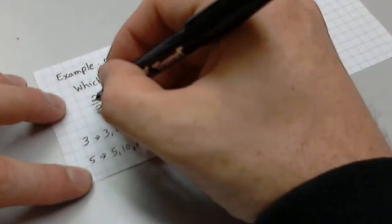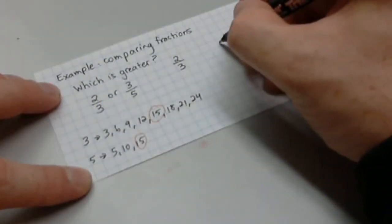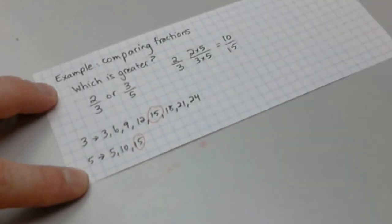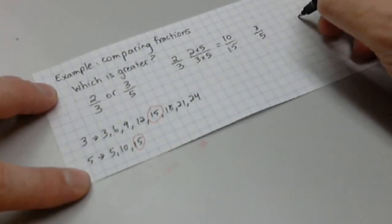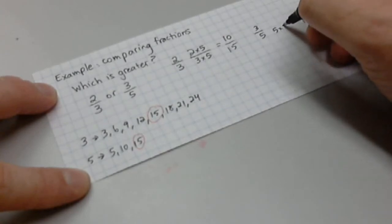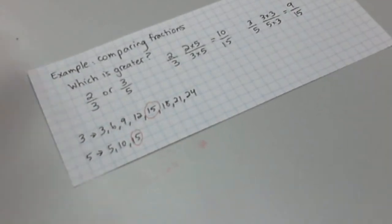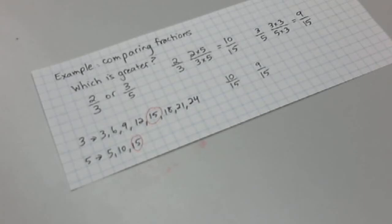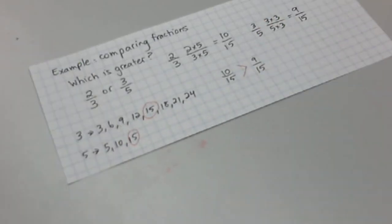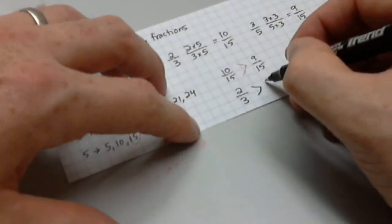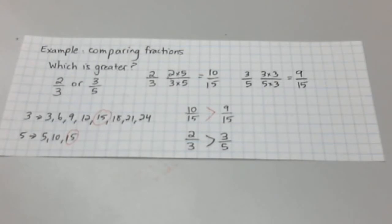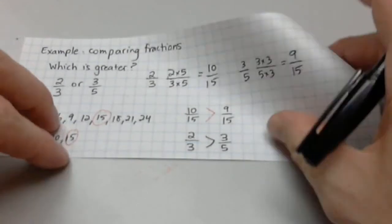So, I want to get from 2/3 to a number over 15. To do that, I have to multiply 3 times 5, which means that 2 also has to get multiplied by 5. So, 2/3, the equivalent fraction to that over 15 is 10 over 15. Likewise, with 3 over 5, I want to end up with a number over 15. To get there, I have to multiply 5 times 3, and then 3 times 3, which gives me 9. Then, which is greater? Well, that means I'm working with 10 over 15 versus 9 over 15. And, since 10 is bigger than 9, we can say that 10/15, or 2/3, is greater than 3/5. That's how that example works.